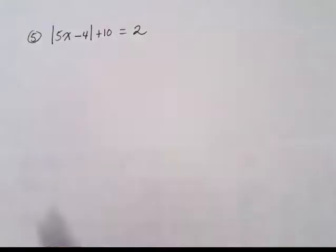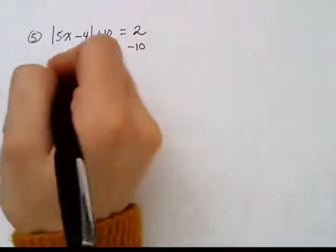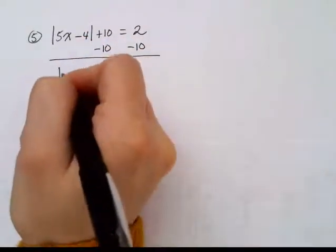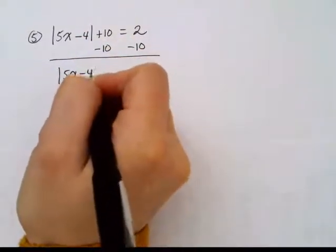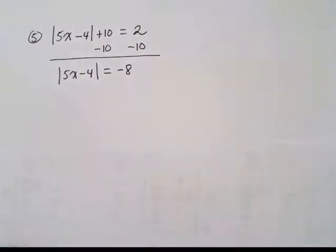So here I'm going to subtract 10 to isolate the absolute value. Absolute value of 5x minus 4 equals negative 8. Now this statement tells me that the absolute value of some expression 5x minus 4 is equal to negative 8.